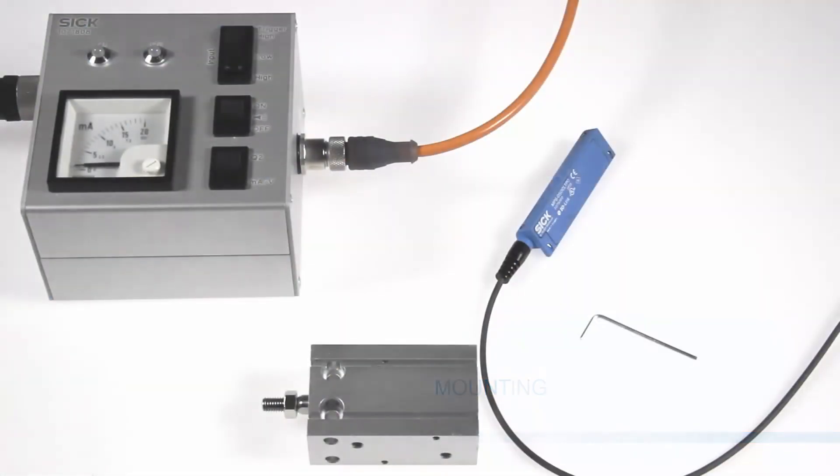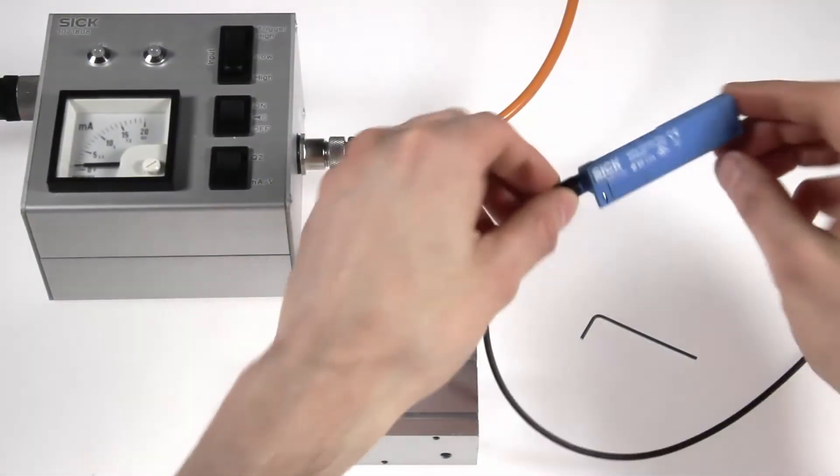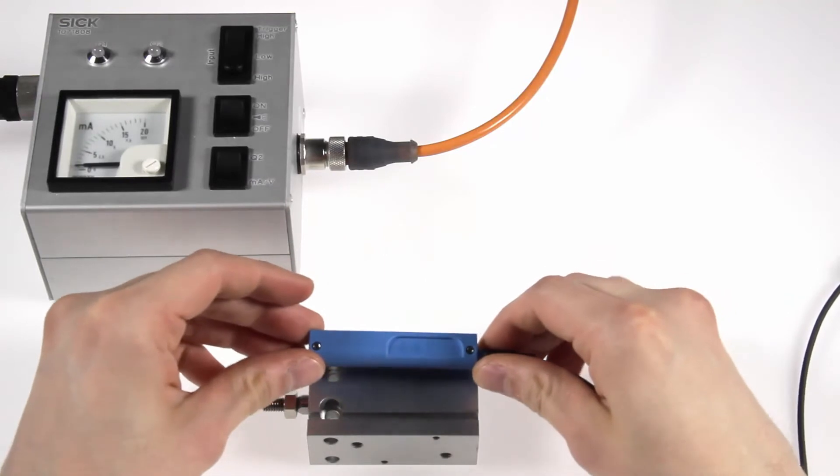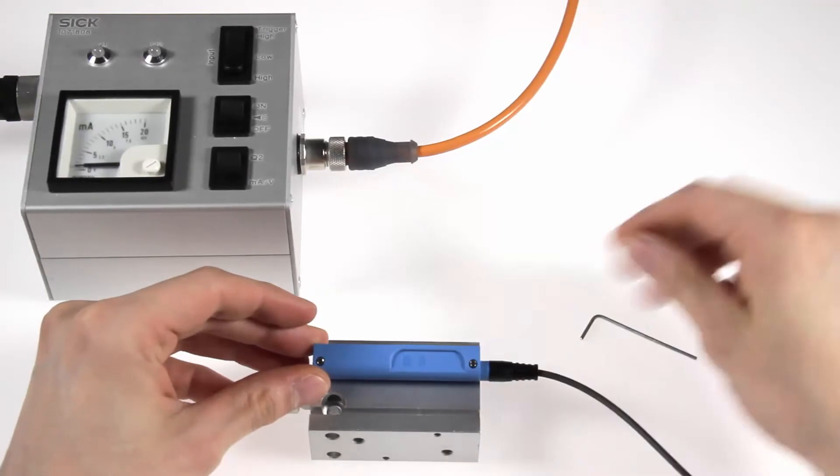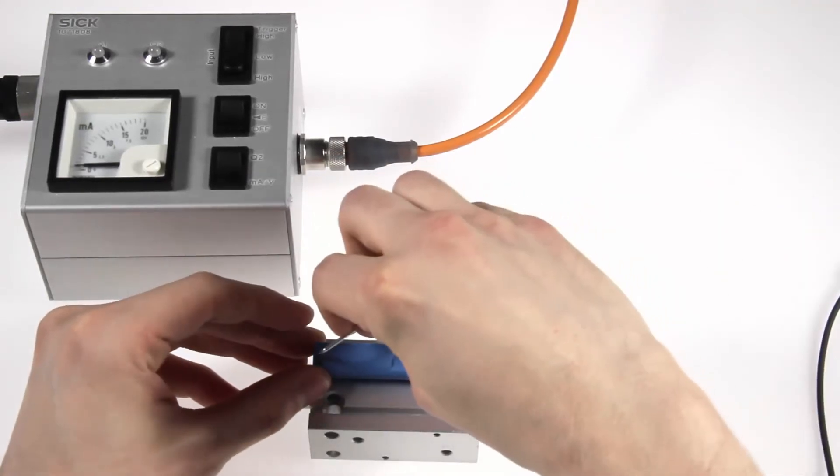Mounting. The sensor can be easily mounted by inserting the sensor from the top into the C-slot of the cylinder. There is no need to slide it in from the side. Take an Allen key and fix the two screws.